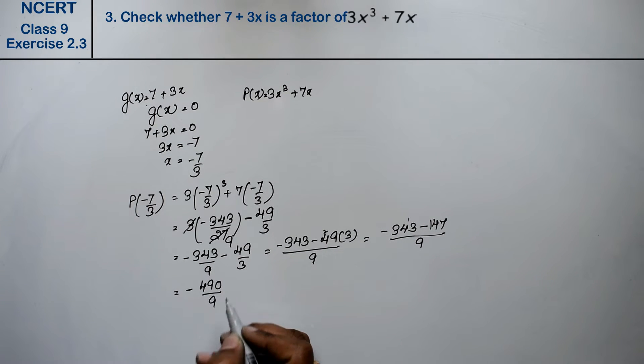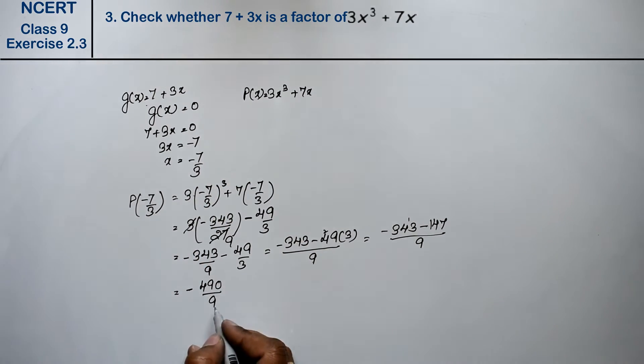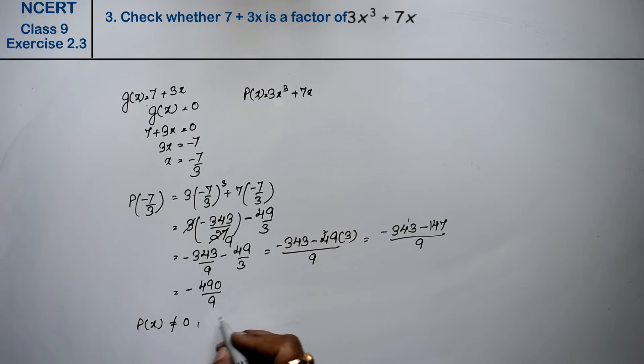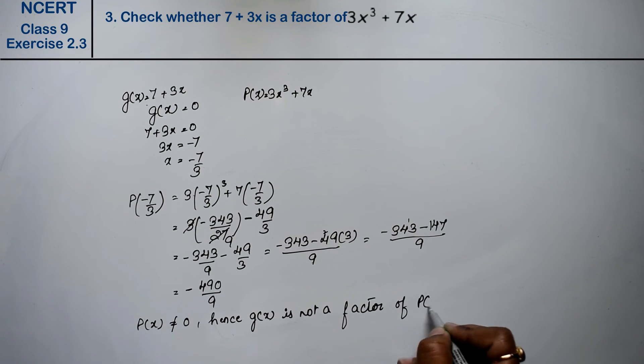This cannot be cut and if this value comes to 0, that means it is a factor of this. But this didn't come to 0. Because p(x) is not equals to 0. Hence, g(x) is not a factor of p(x). Answer.